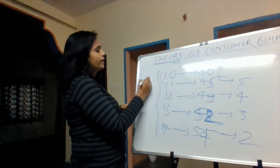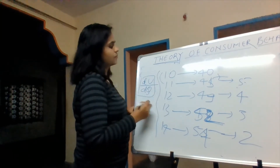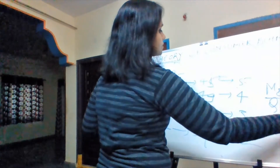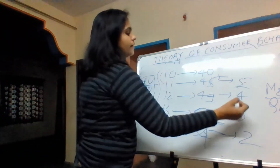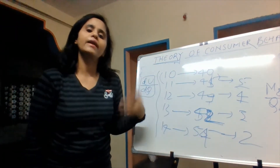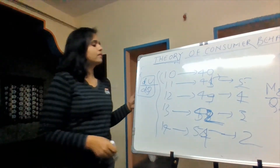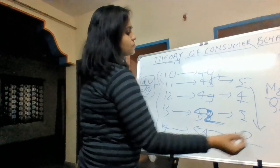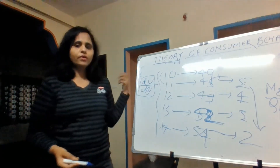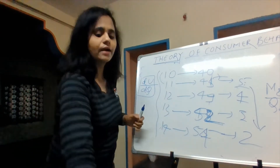Your utility might be increasing — we know that when we consume more goods, we get more utility, and that is true. But your marginal utility will be diminishing. When you are consuming 10 units, marginal utility is 4, but when consuming 14 units, it is only 2. So despite utility increasing, marginal utility keeps decreasing with increasing quantity. That is your fourth assumption.